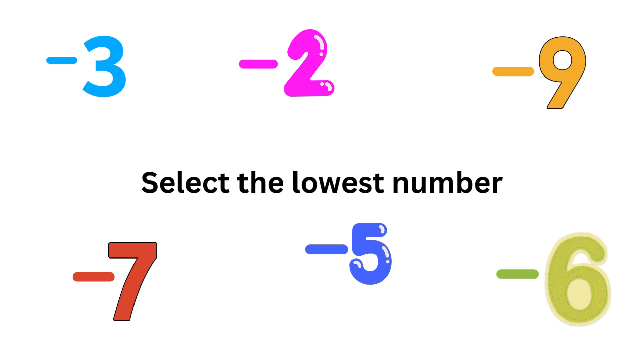Can you remember what I said at the start of the video about negative numbers? Here we need to select the lowest number. The lowest number would be minus nine, because the further away that we get from zero, the smaller the number. So the answer is minus nine.